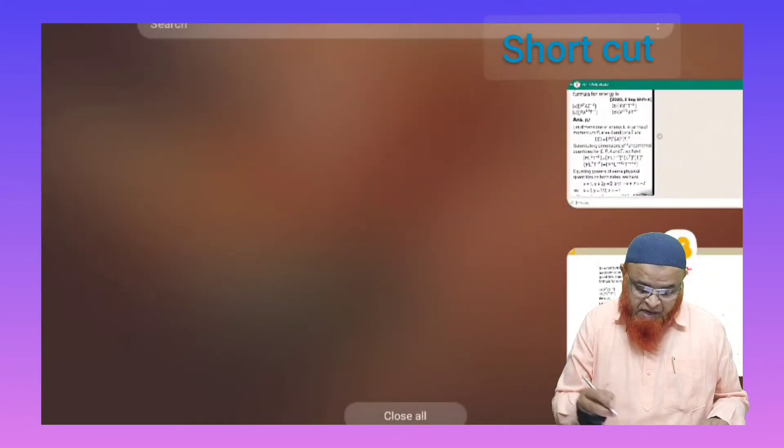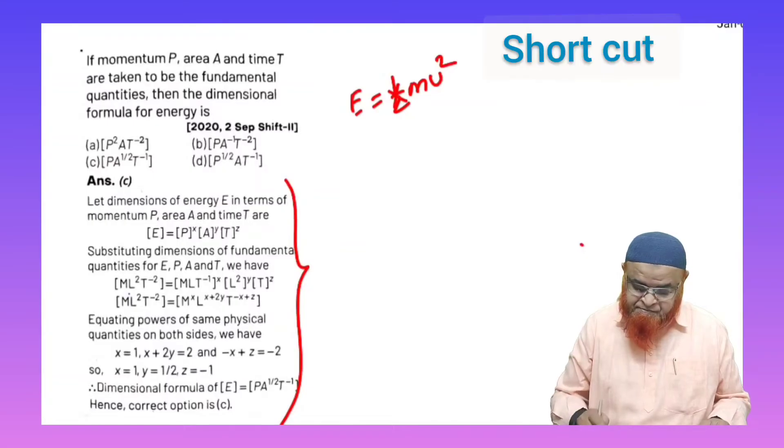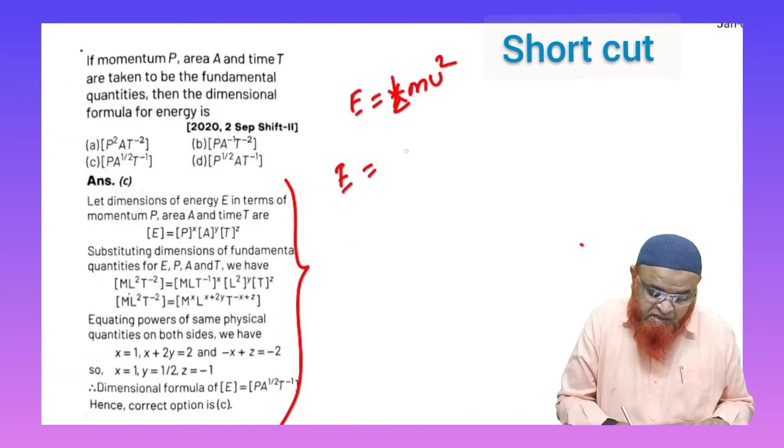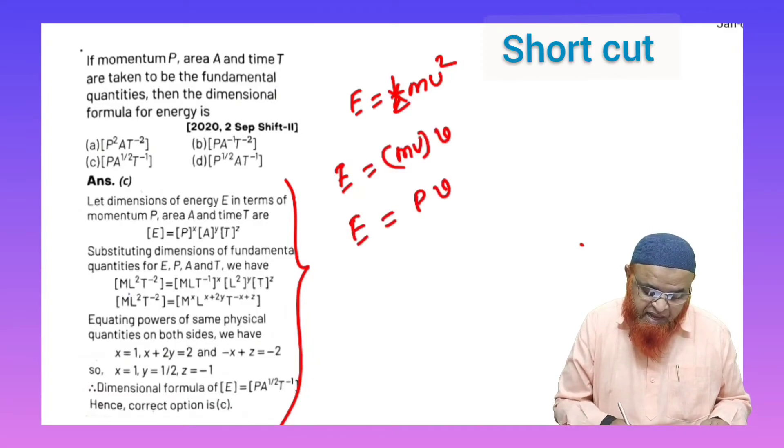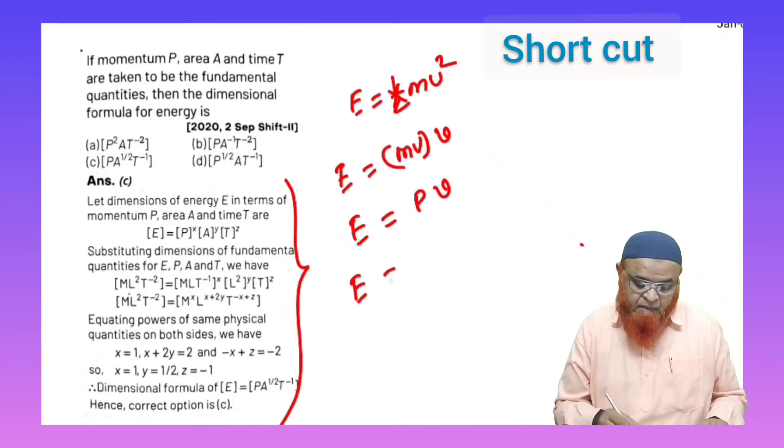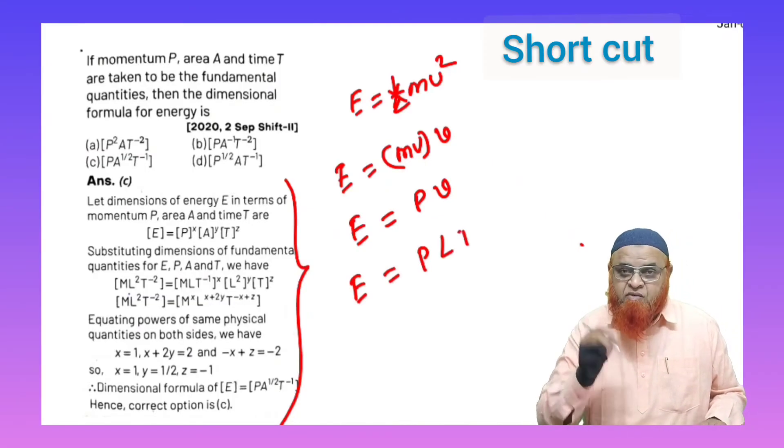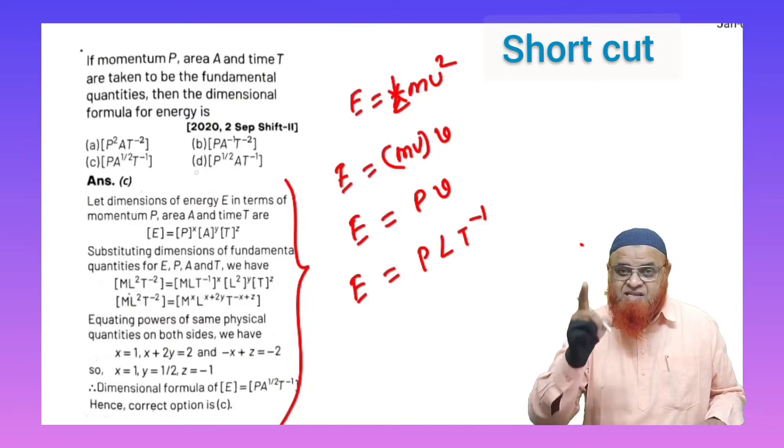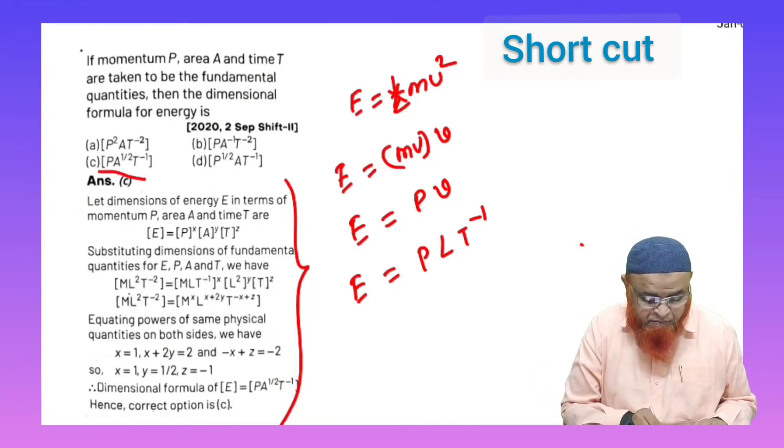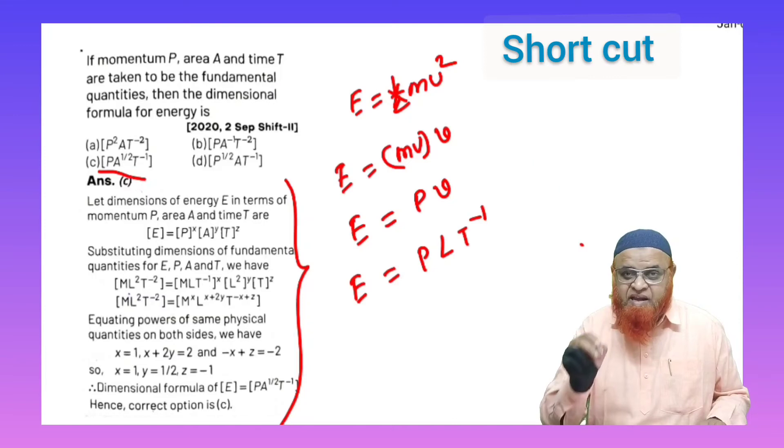But can you write this mv square as mv into v? Can you write this as p into v? And can you write this as p only, but velocity can you write this as lt power minus 1? And you also have to replace l with a, because in the problem momentum is there, area is there, time is there, but length is not explicitly given as area.